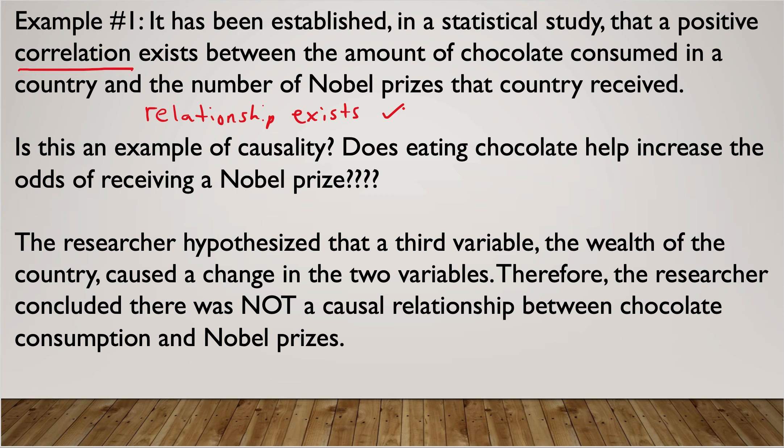The question is: is this an example of causality? Does one cause the other? Does eating chocolate help increase the odds of receiving a Nobel prize? We know that probably doesn't make sense — it wouldn't make sense to say that the more chocolate you eat, the greater the chance is that you would receive a Nobel prize. What actually happened was that the researcher found something else causing that relationship: the wealth of the country caused a change in those two variables. There's not a causality relationship between chocolate consumption and Nobel prizes, but there might be a causality relationship between how much money a country has and how many Nobel prizes that country produces.